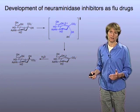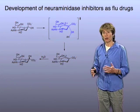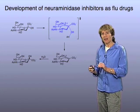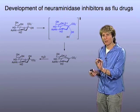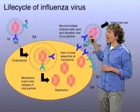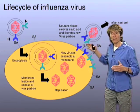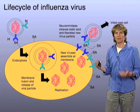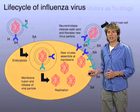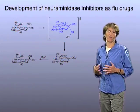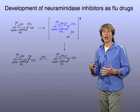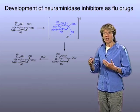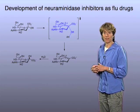Knowing the importance of neuraminidase in the viral life cycle, many scientists thought that if one inhibits that enzyme and prevents this very last step in the cycle, one might be able to shut down the propagation of the influenza virus. A large drug discovery effort was underway back in the 1990s, even the late 1980s, to develop inhibitors of the neuraminidase enzyme.